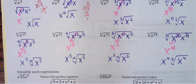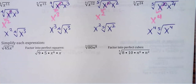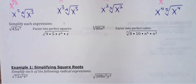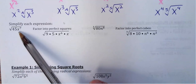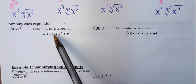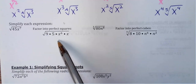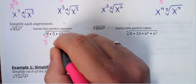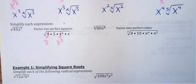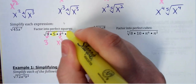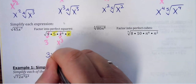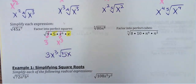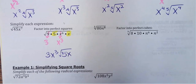Now we'll put variables and numbers into the same problem. For √(45x⁷): we already know 45 breaks down as 9 times 5. For x⁷ under a square root, I use x⁶·x. So 9 comes out as 3, x⁶ comes out as x³. Anything left stays underneath — the 5 wasn't a perfect square and the x wasn't, so they stay. The result is 3x³·√(5x). Some answers look complex, but if there are no more perfect squares, that's your final answer.